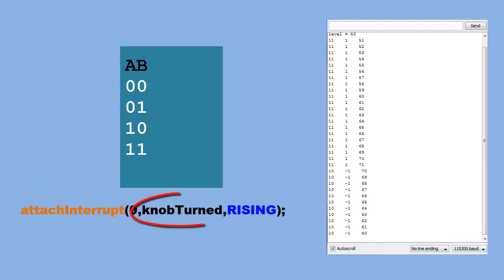The second parameter is the function we want to call when an event triggers our interrupt. I call that function knob turned. The last parameter is the event that's going to trigger the interrupt. My choices are changed, rising, and falling. I chose rising because I want to call my function every time my pin switches from low to high.